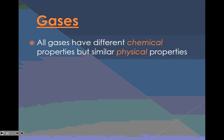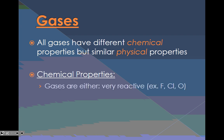So all gases have different chemical properties, but they very much have similar physical properties. Let's take a look at some chemical properties. Gases are either very reactive like fluorine, chlorine and oxygen, slightly reactive like nitrogen, that's why the air is mostly nitrogen because it's not very reactive. And they can be inert, which are your noble gases. Inert means they don't react.